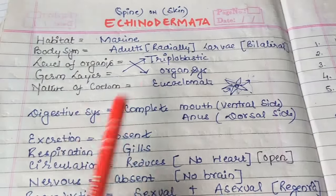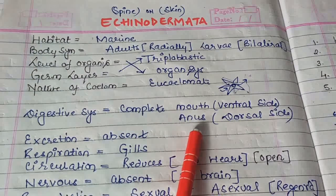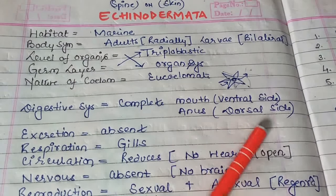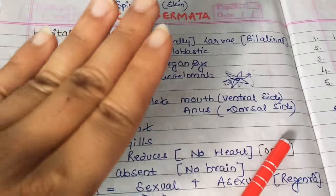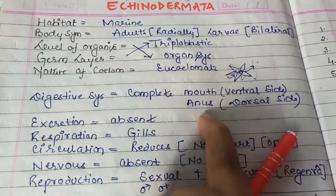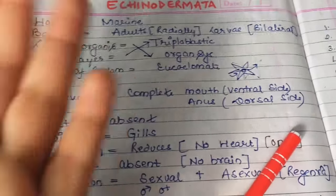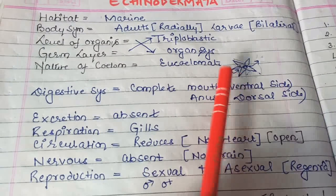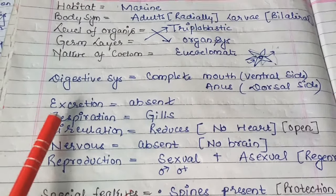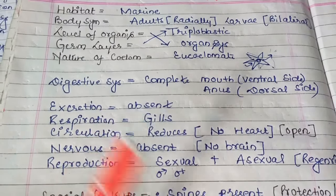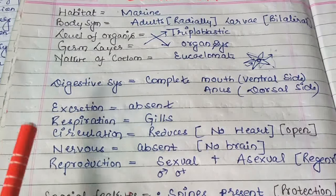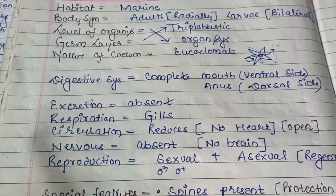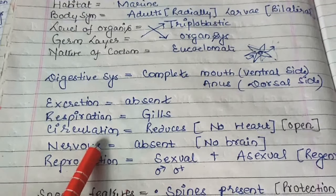Coming to the digestive system: it is complete. The mouth is on the ventral side and the anus is on the dorsal side. The upper body part is called the dorsal part, which has an opening called the anus, and the lower body part has an opening on the ventral side called the mouth. Excretion system: absent — no excretory organs are found. Respiration: gills are present because they are aquatic organisms. Circulation: reduced — no heart is present and it is an open circulatory system.